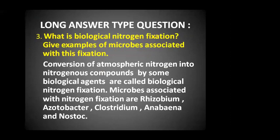Question number 3: what is biological nitrogen fixation? Give examples of microbes associated with this fixation. Conversion of atmospheric nitrogen into nitrogenous compounds by some biological agents is called biological nitrogen fixation. Microbes associated with nitrogen fixation are Rhizobium, Azotobacter, Clostridium, Anabaena, and Nostoc.